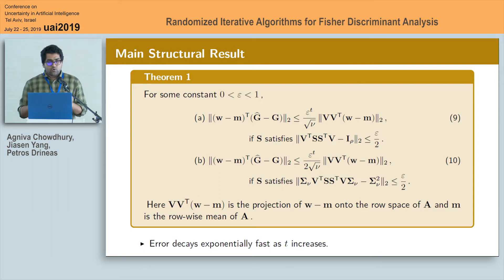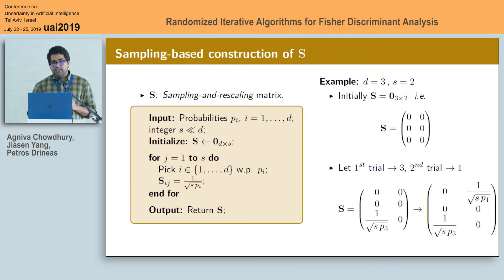Now the question is how to construct the sketching matrix S such that these two structural conditions get satisfied with high probability. Here we use a standard construction algorithm from randomized linear algebra literature which returns the sketching matrix S in the form of the so-called sampling and rescaling matrix. This is how this algorithm works.